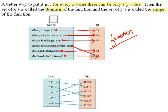Now because this is a function, this first set we actually call the domain, and the second set we actually call the range. So if we were listing out our domain here, it would be the Wendy's single 410, the Wendy's big bacon classic 480, and so on and so forth.